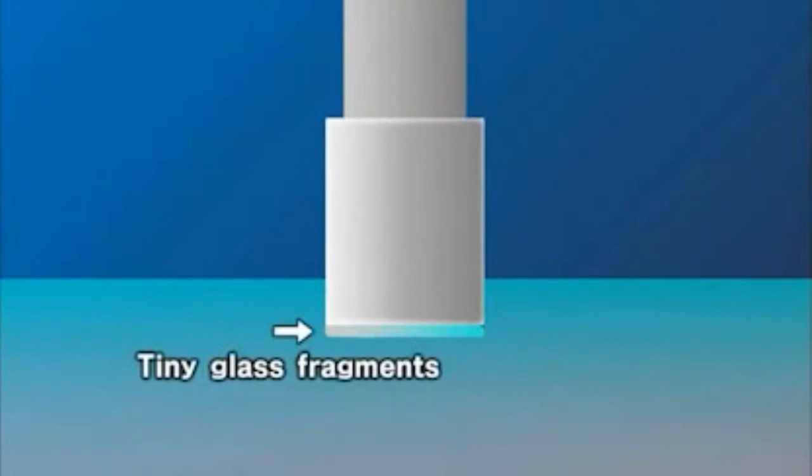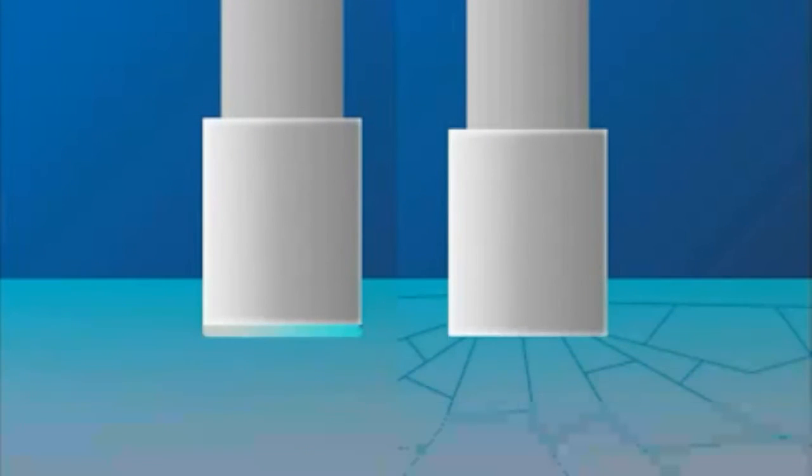But by using a tool which vibrates 40,000 times per second ultrasonically, the glass is finely ground the moment the tool touches the surface. And the tiny fragments of ground glass that fall between the tool and the plate reduce friction. In this way, it becomes possible to machine the glass without breaking it.